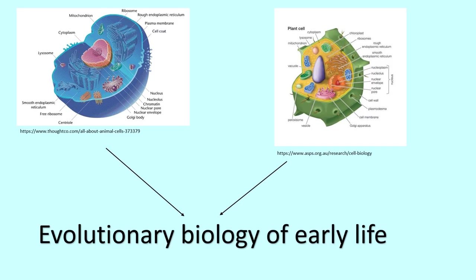Overall, the origin of eukaryotes and the organelles present in eukaryotes hold a significant role in the evolutionary biology of early life. Eukaryotes were first able to evolve from prokaryotes through the loss of the cell wall and folding of the more flexible membrane underneath. Once eukaryotes formed, an endosymbiotic process is responsible for the origin of specific organelles such as mitochondria and chloroplasts.